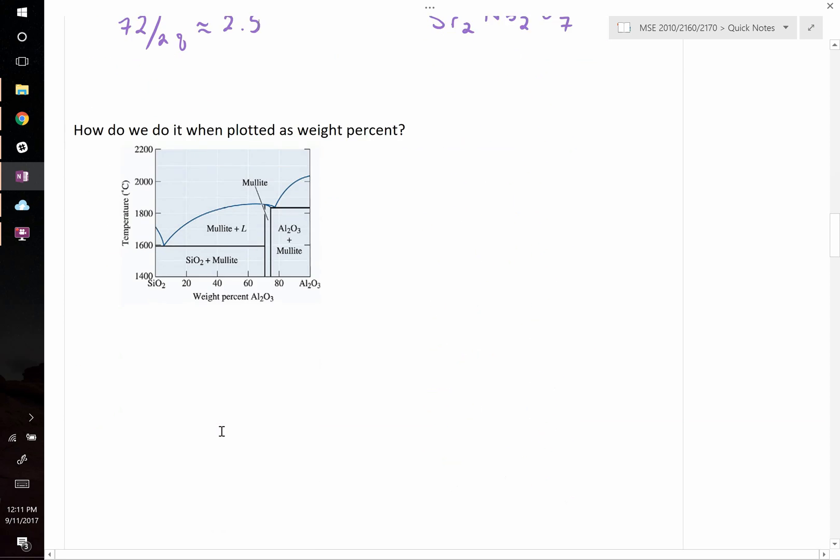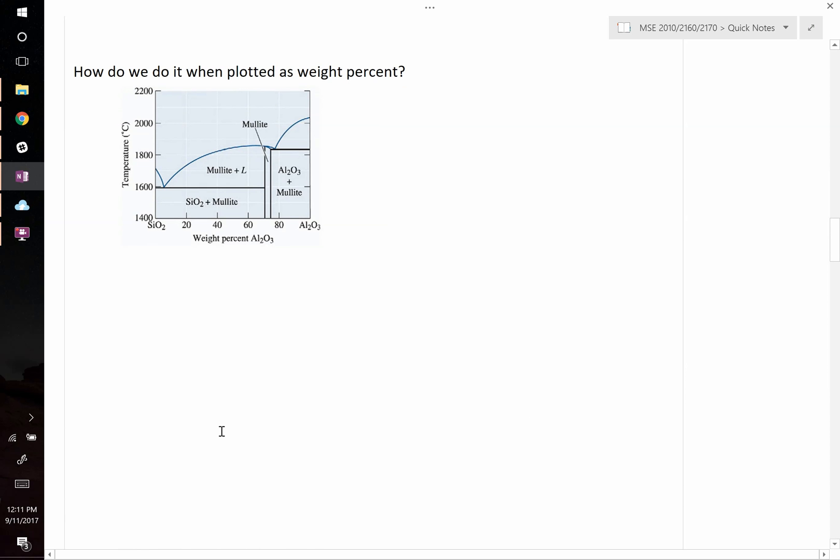But what about when it's plotted as a weight fraction? For example, in the mullite crystal system. Mullite is a very important ceramic as a refractory material and it's a mixture of silica and alumina. If you look at the phase diagram, mullite occurs at about 70 to 75 weight percent Al2O3. Let's say it's happening right around 73 weight percent of Al2O3. How do we figure out the chemical formula of mullite?